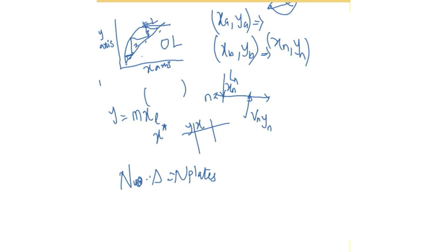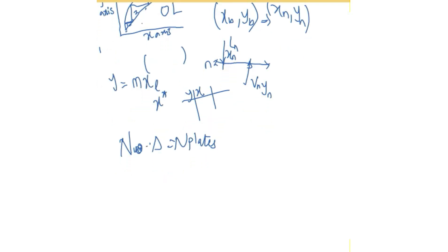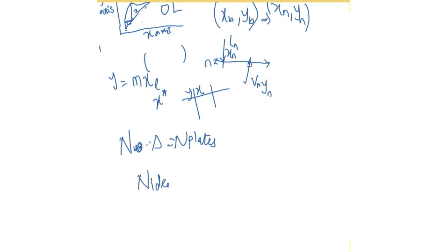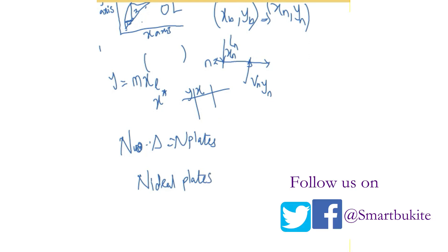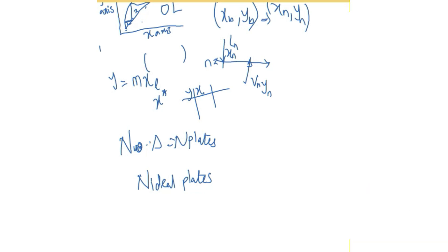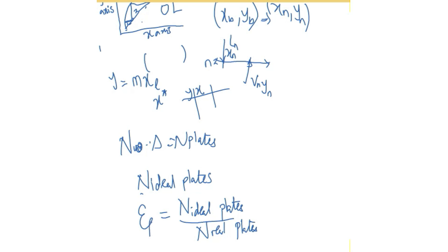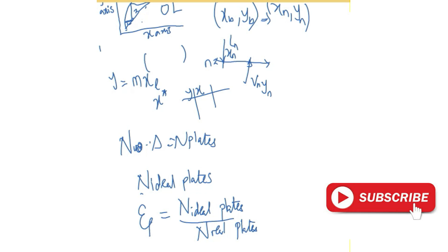I have now explained the concept of absorption and stripping and the two ways to solve them. We also have the number of ideal plates versus real plates. Efficiency is defined as the number of ideal plates divided by the number of real plates. If given the efficiency, you can determine ideal or real plates from one another.